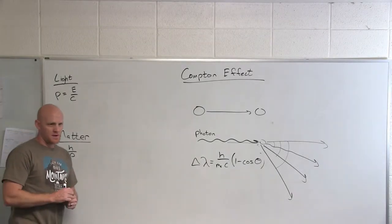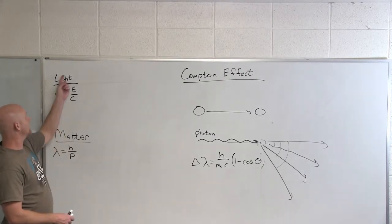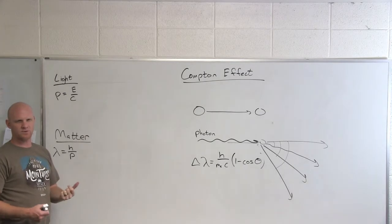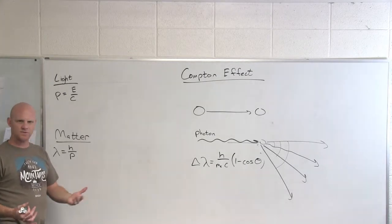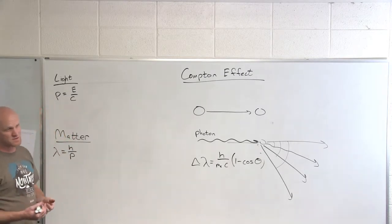So it turns out that light actually has a momentum associated with it, even though it doesn't have a rest mass, which is kind of weird. We usually think momentum classically is mass times velocity, and if light doesn't have a mass, but it turns out it does have a momentum associated with it.